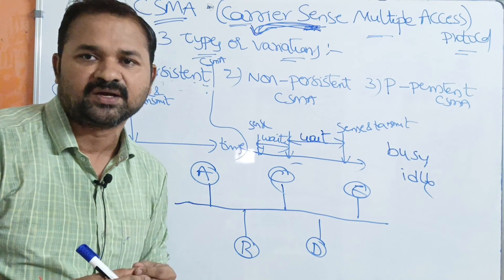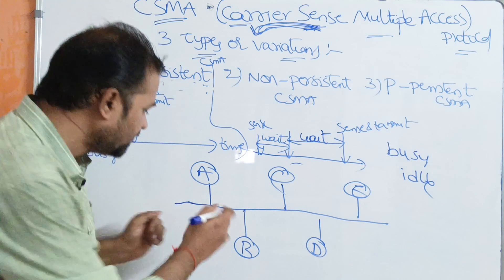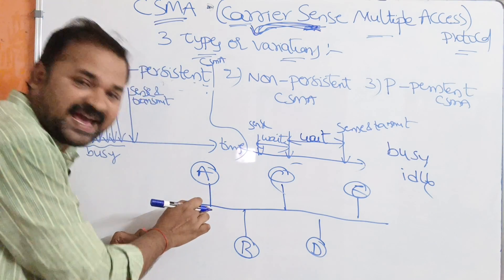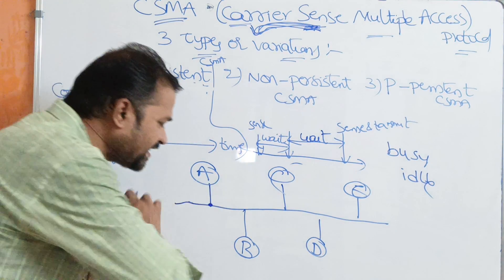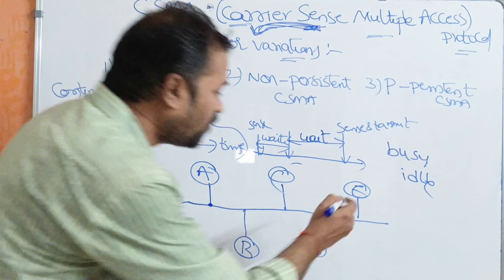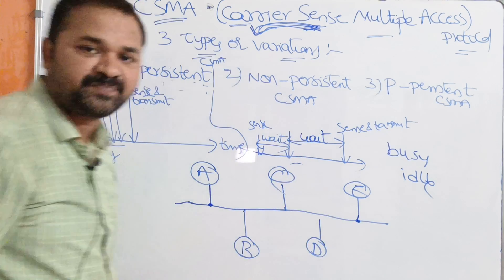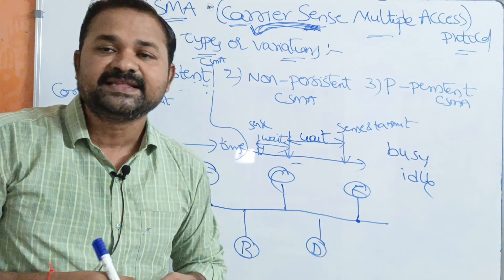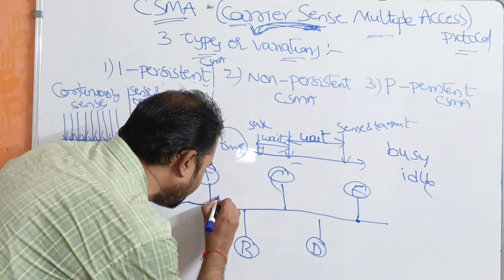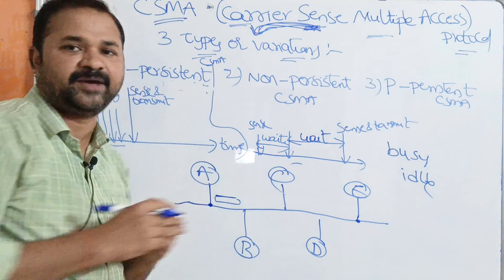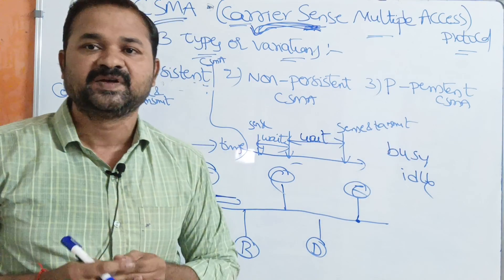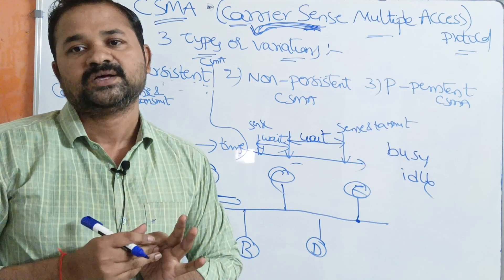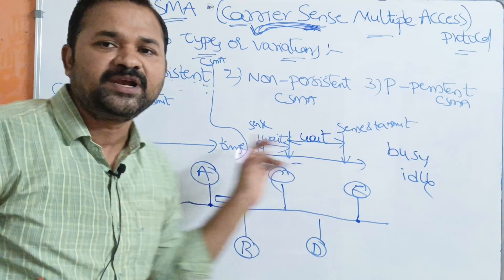CSMA is a random access protocol, so any station can send data to any other station. When a station senses the carrier, it only checks its local point on the line — the entire channel is not checked. If the channel is idle, the station can send the data. If the channel is busy, the station must wait until the channel becomes idle before transmitting.